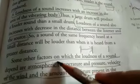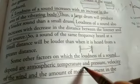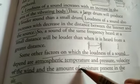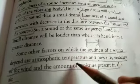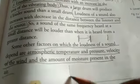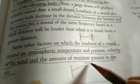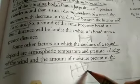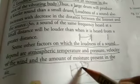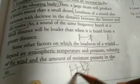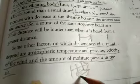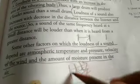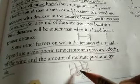Other factors on which loudness depends include atmospheric temperature, pressure, velocity of wind, and the amount of moisture present in the air. You will study these in detail in higher classes. A simple example: if you are on a motorbike and the wind is blowing in the opposite direction to the sound, the listener hears less sound; if the wind blows in the same direction, the listener hears more sound.